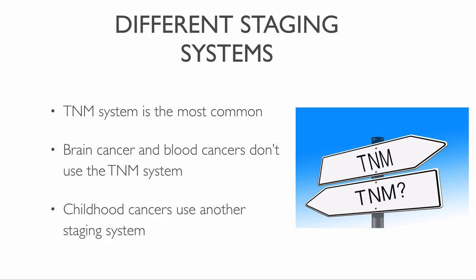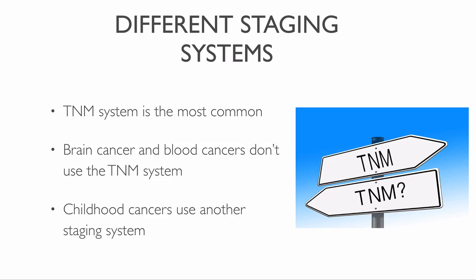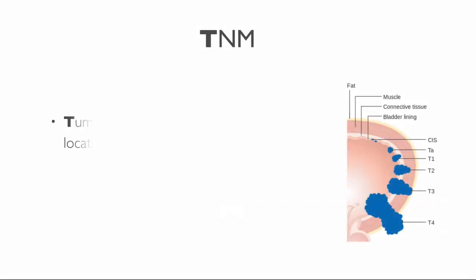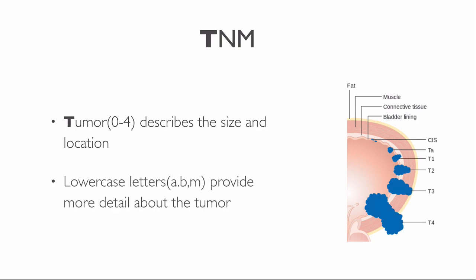In the TNM system, each cancer has a letter or number to describe its spread. Tumor — T: the letter T plus a number zero to four describes the size and location of the tumor. It indicates how much the tumor has grown into nearby tissues. A larger tumor that grows deeper into the surrounding tissue receives a higher number. Some types of cancers have lowercase letters such as A, B, or M for multiple, added to the T to provide more detail.